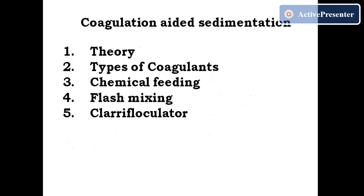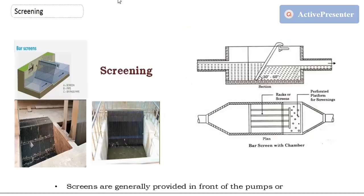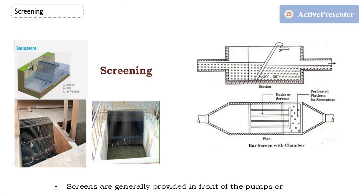It is a somewhat big module with four main headings which we are going to study one by one. I hope we have understood the syllabus involved in this third module. Now, why is screening required? This chapter covers water treatment and water purification. First, the water is taken from a source — which we studied in the second module — that source may be a well, dam, river, or whatever, and that water is brought directly to the treatment plant.